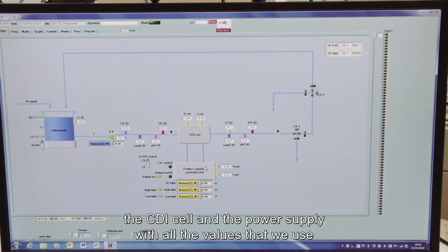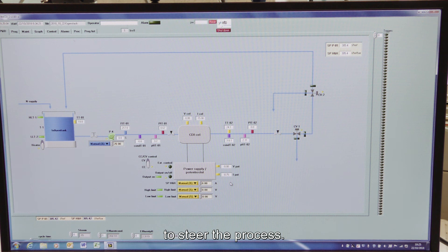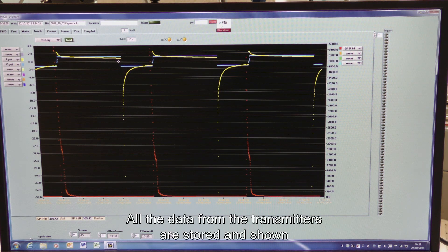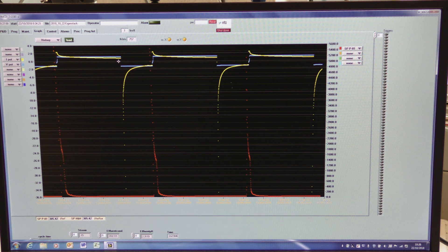the CDI cell, and the power supply with all the values that we use to steer the process. All the data from the transmitters are stored and shown graphically in the software.